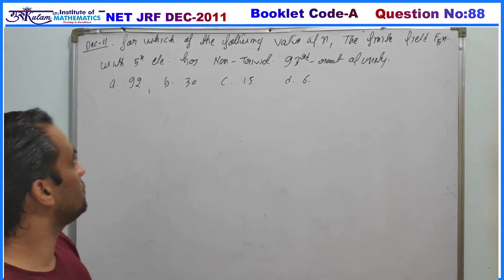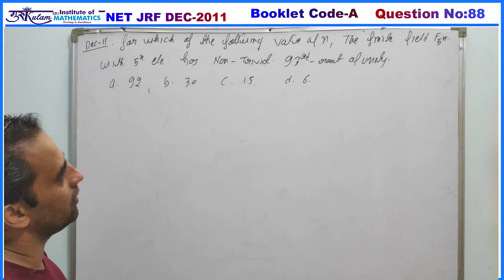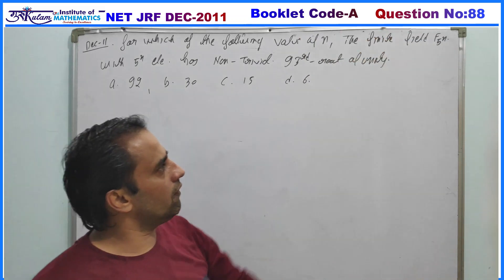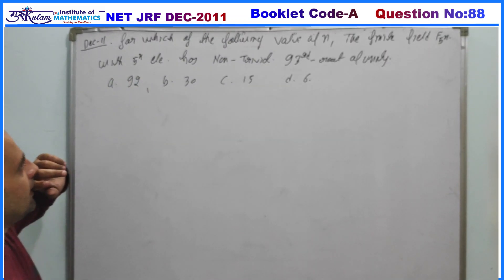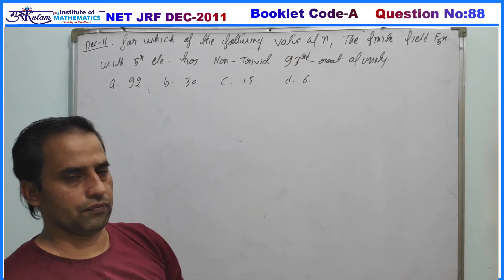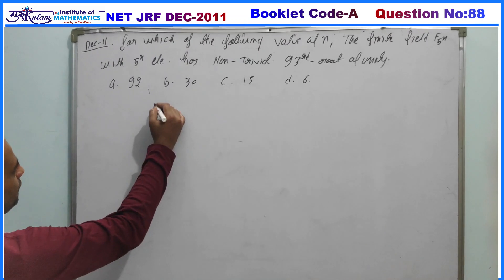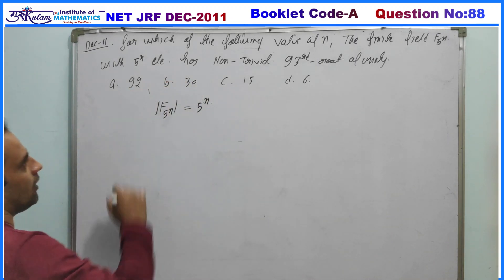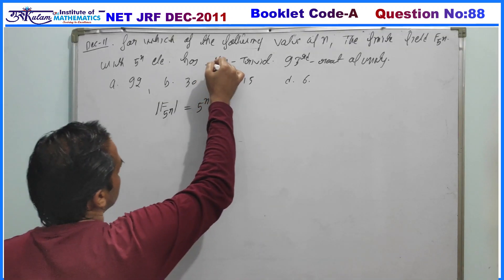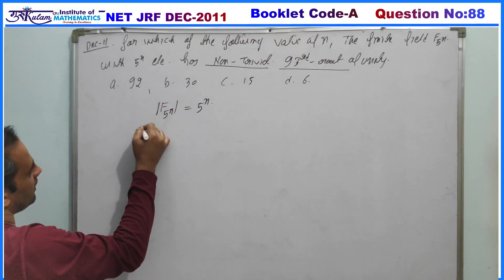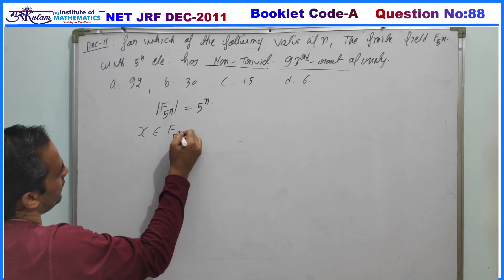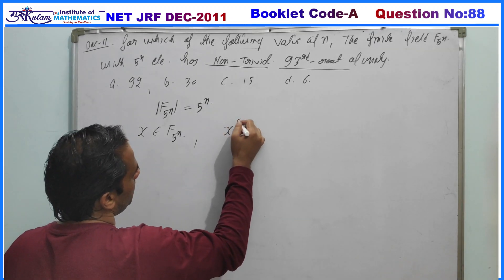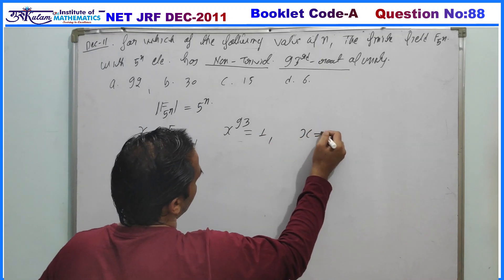This question is from December 2011, from ring theory. The question asks: for which value of n does the finite field F(5^n), with 5^n elements, have a non-trivial 93rd root of unity? That is, we need x in F(5^n) such that x^93 = 1 and x ≠ 1.